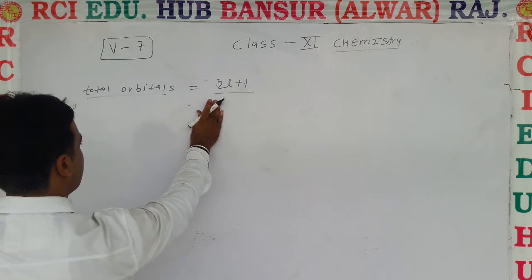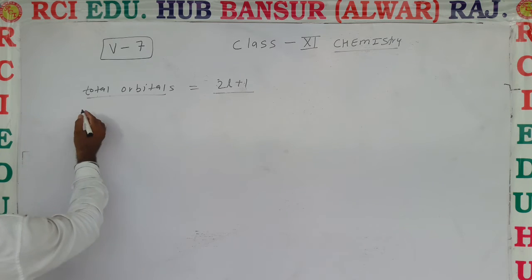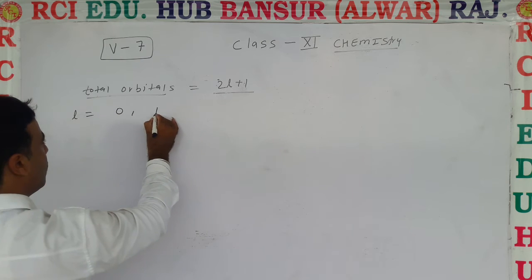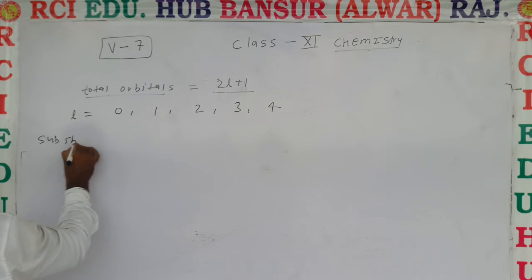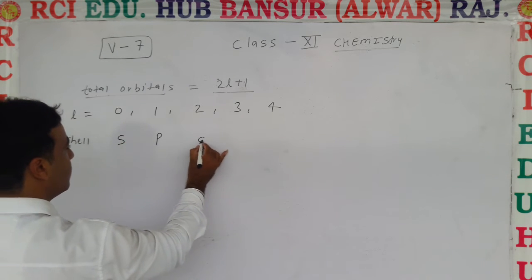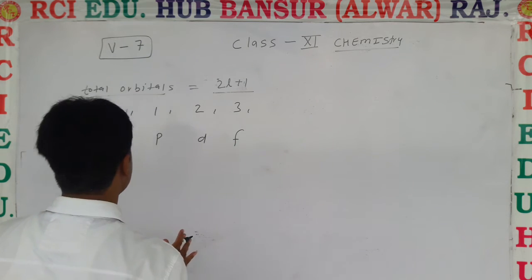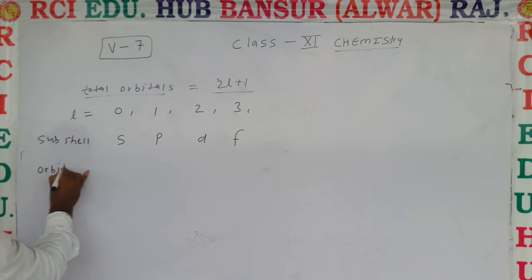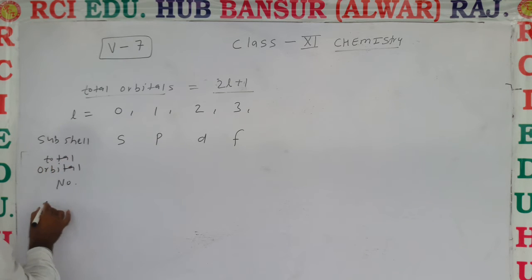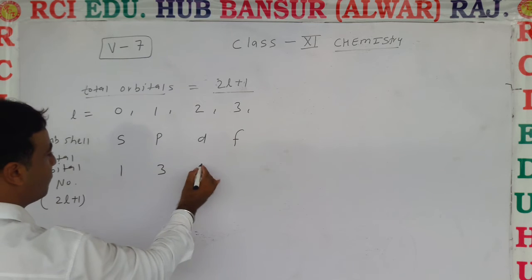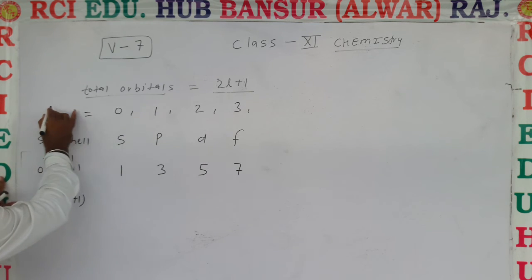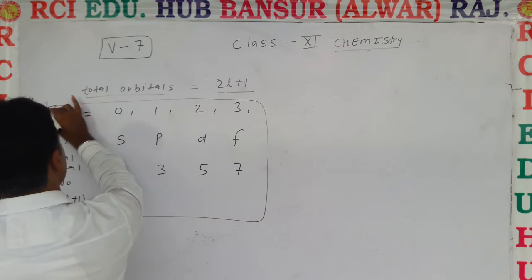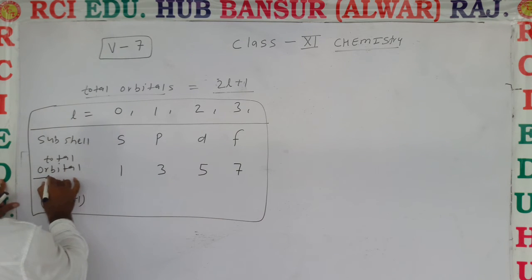In summary, the azimuthal quantum number l has values 0, 1, 2, 3, 4 corresponding to sub-cell names s, p, d, f, g. The total orbital numbers from the 2l + 1 formula are 1, 3, 5, 7 respectively. This gives us a complete summary table of l values, sub-cell names, and number of orbitals.